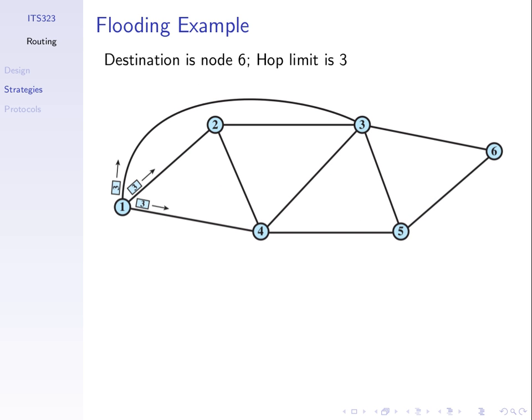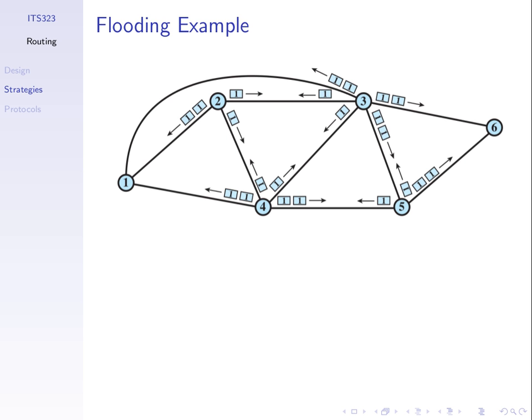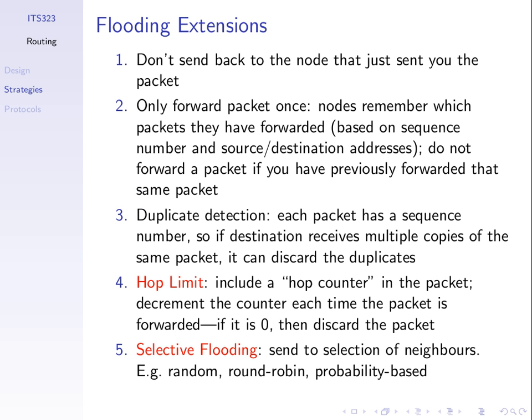In the example, node one transmits to neighbors two, three, and four. They send to their neighbors. Then node four will receive packets from five, two, and three - three packets. With normal rules, it receives a packet and sends to its neighbors again. Four would send three copies to its neighbors, as would other nodes, and we could keep sending forever. We want to limit that because the data has already been delivered to six, so there's no need for the network to keep sending those packets.